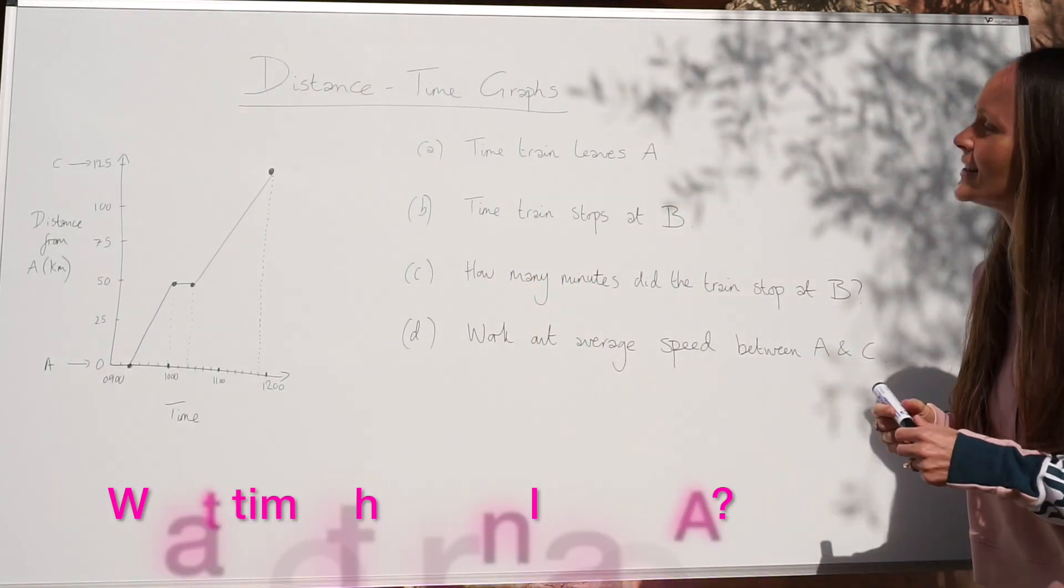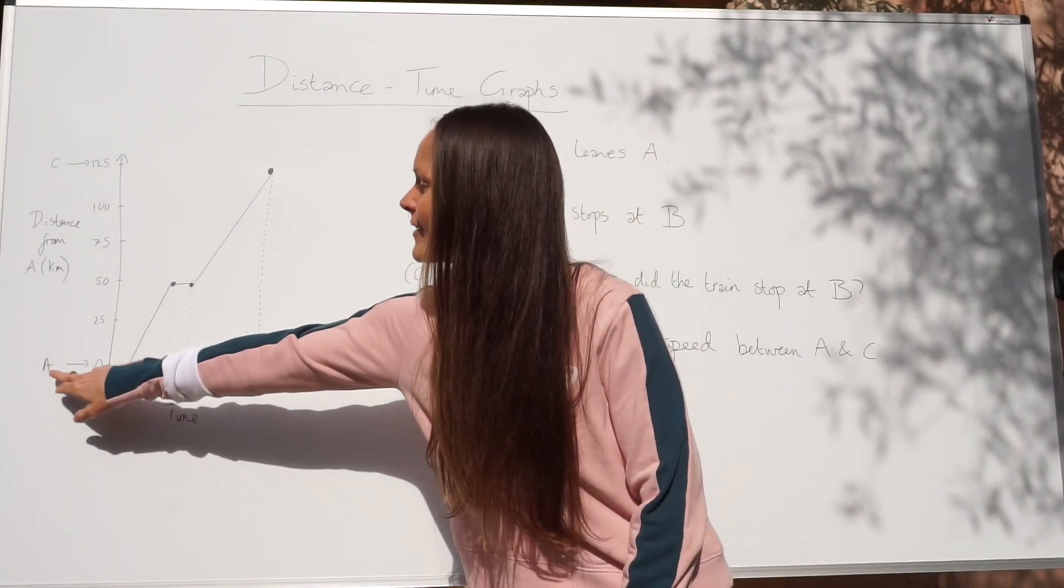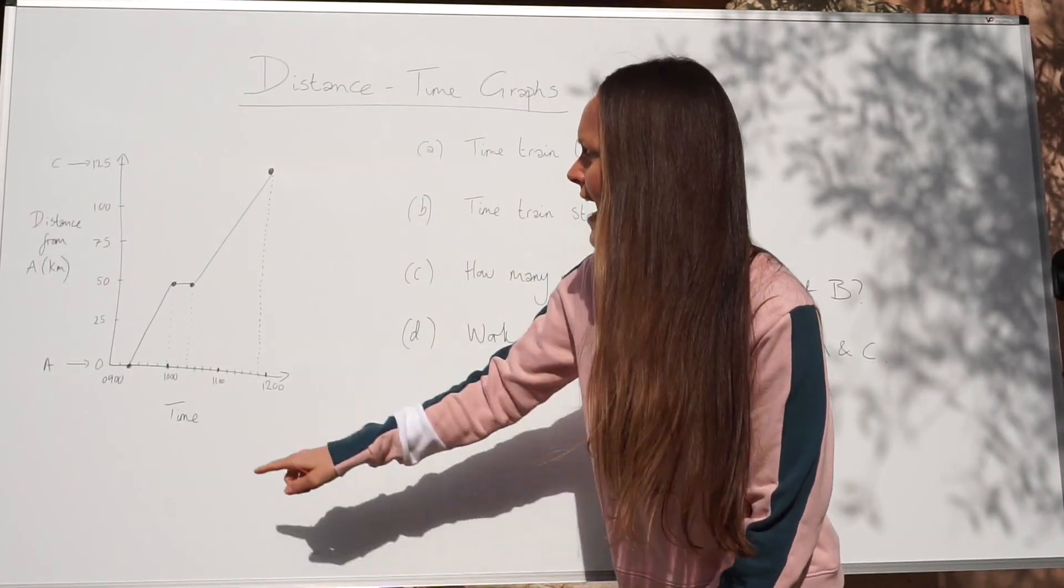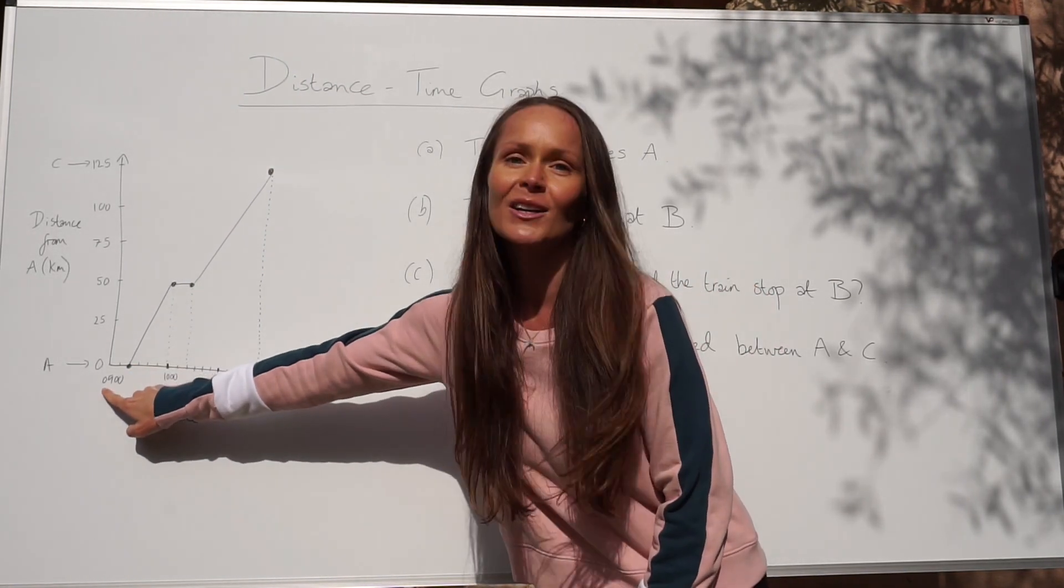For part A it asks us what time the train leaves A. So A is labelled down here at the bottom of the graph and you can see the time just here. So this is 9 o'clock,